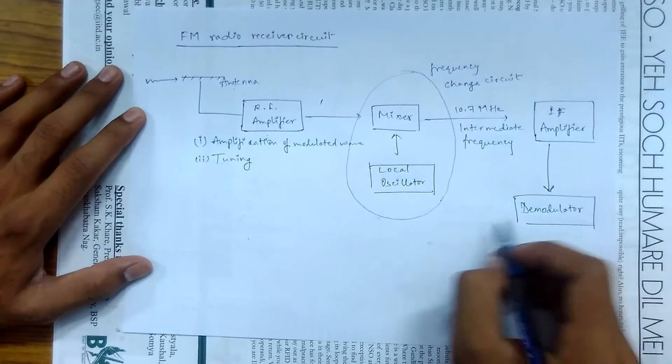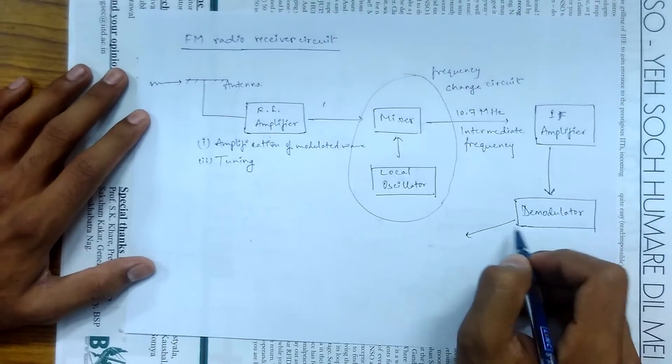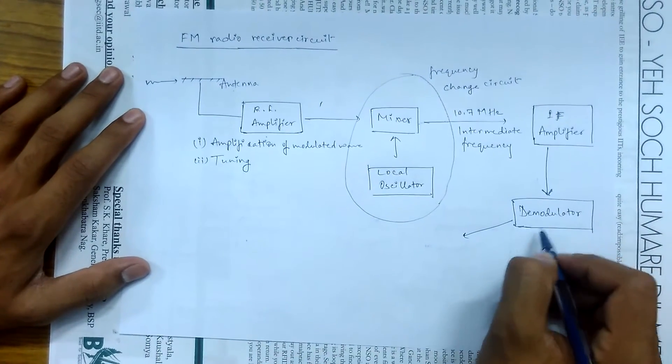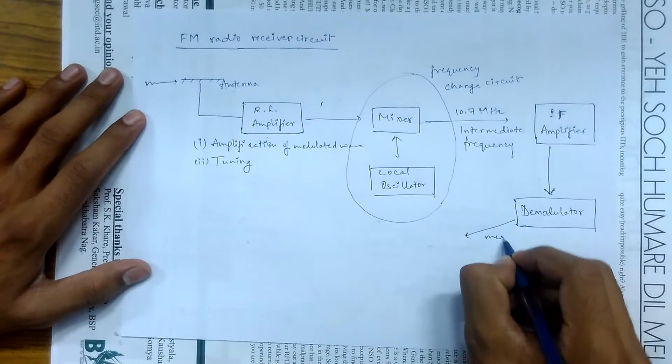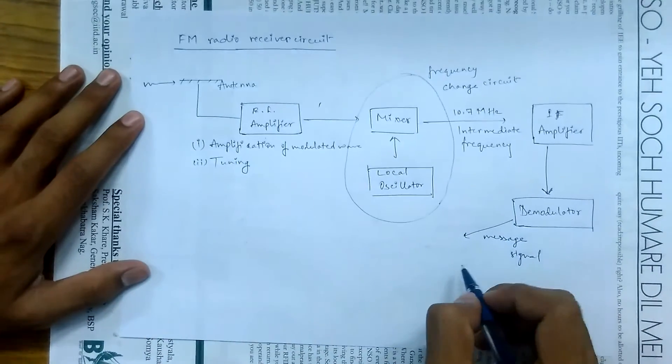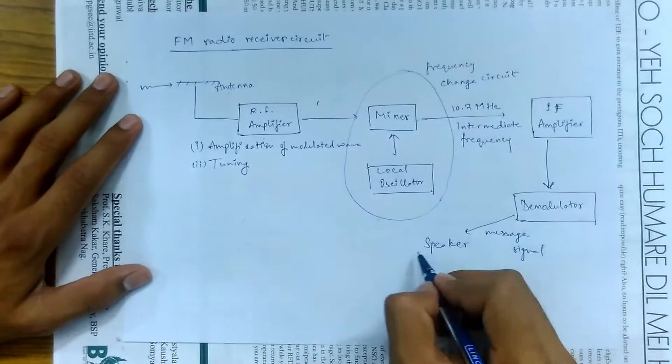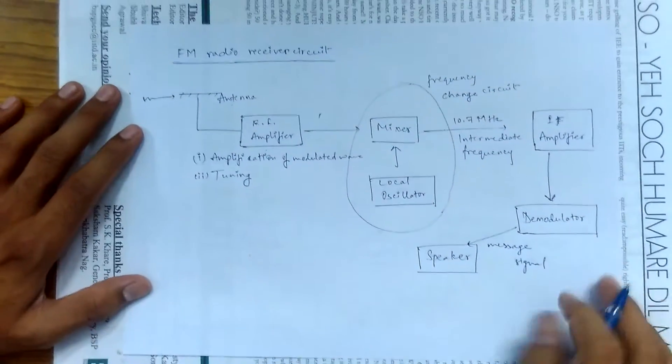As the name suggests, the demodulator separates our message signal and carrier wave. So after the demodulator, we get our message signal. This message signal is forwarded to our speakers, in case of radio, or to video or television sets.